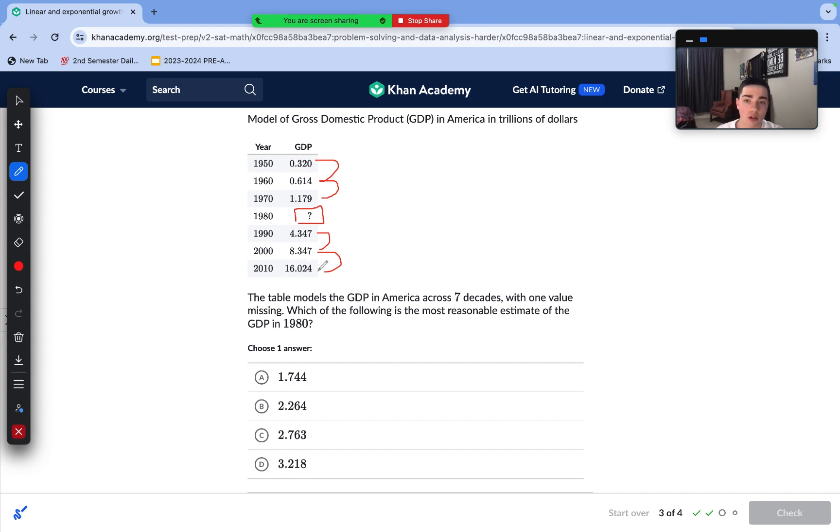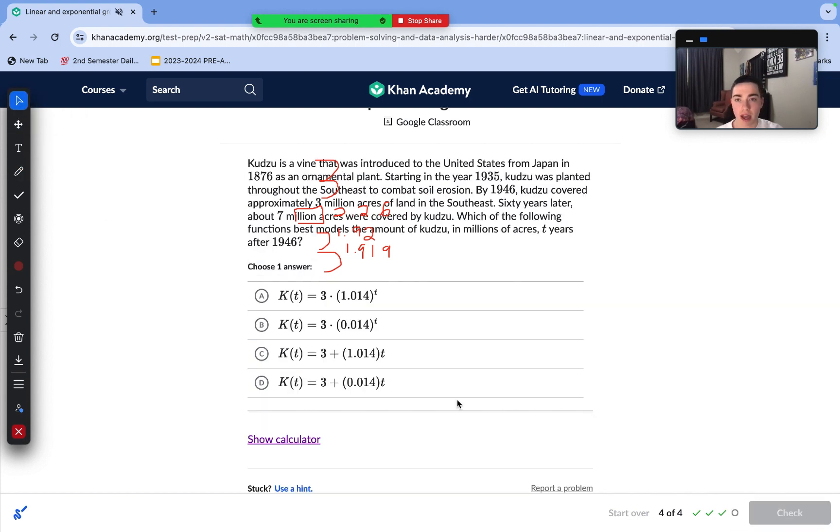So doing 16.024 divided by 8.347, and then so on and so forth. As we can see, this factor is quite constant at around 1.92. So that means we do 16.024 divided by 1.919 to get 8.347, divide that by 1.92 to get 4.37. In order to find the best estimate, we can go ahead and divide 4.347 by 1.92. This yields 2.26 as our answer, and that is the closest to answer choice B by a mile. Answer choice B is correct.